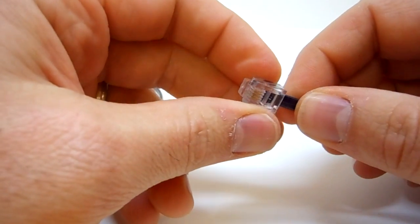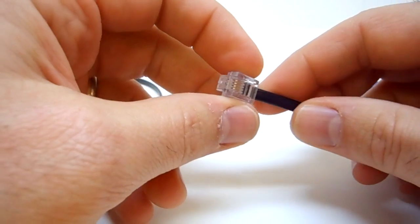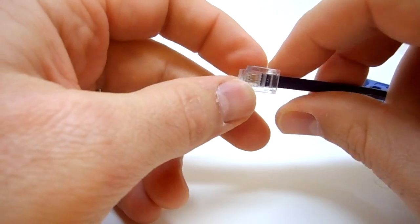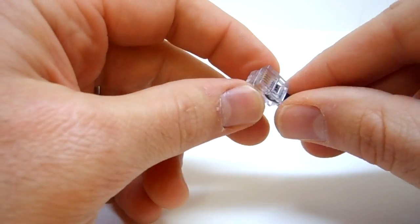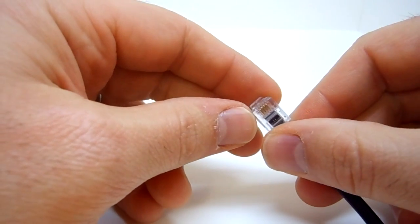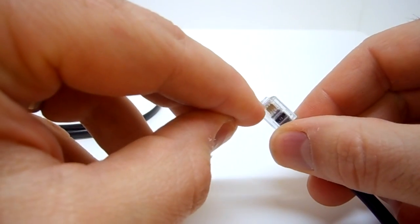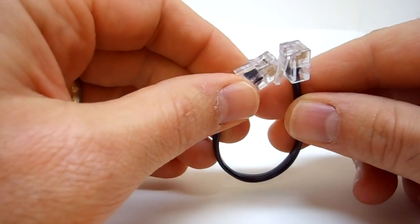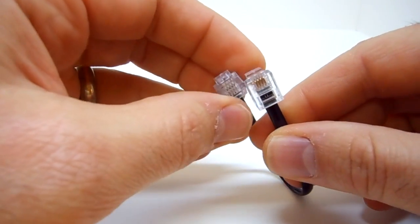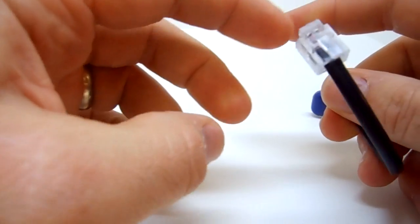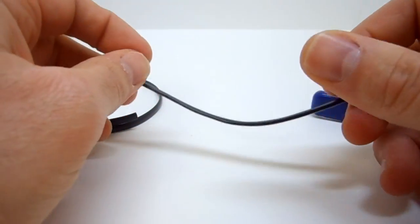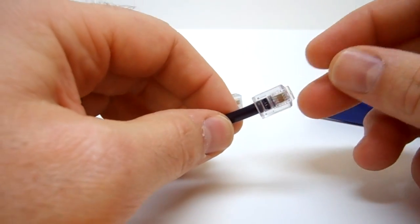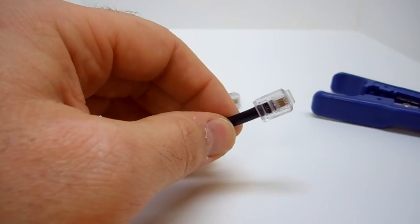The connector we're using is a 6P4C connector, RJ11 type. That means there's six places but only four contacts - one, two, three, four gold contacts. This particular connector is gold plated, so it's a fairly reliable connector. They're about 27 cents apiece if you buy them from our website, www.crosstheroadelectronics.com.